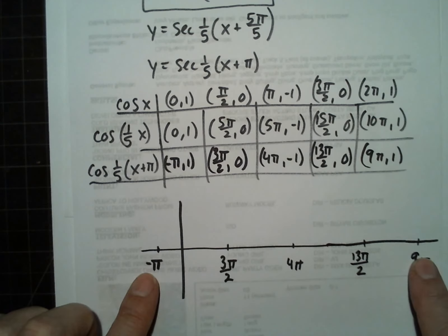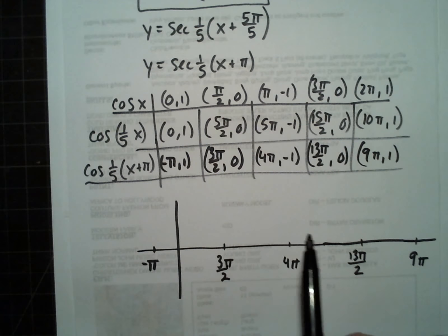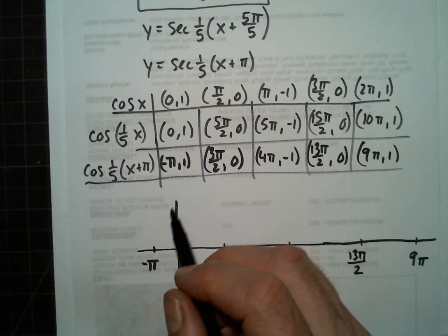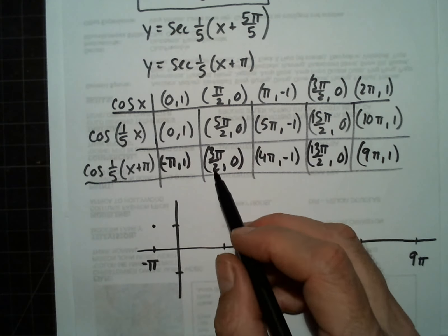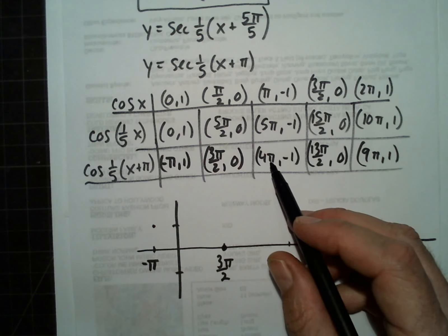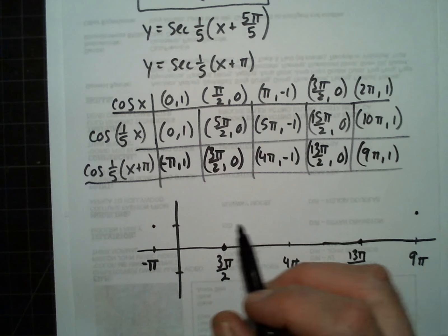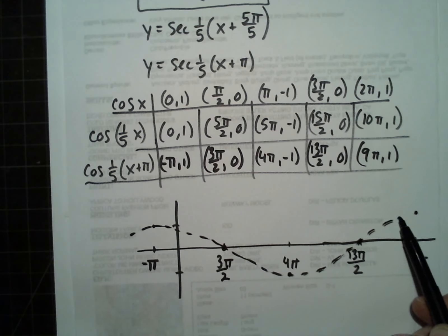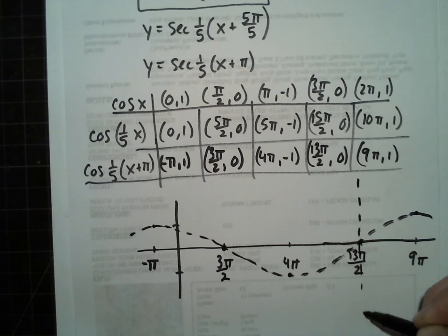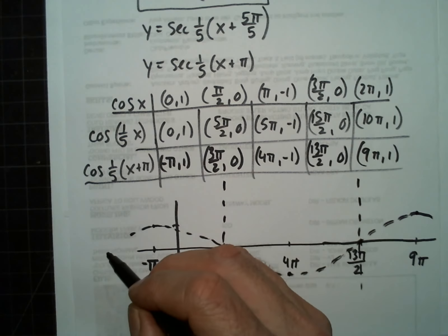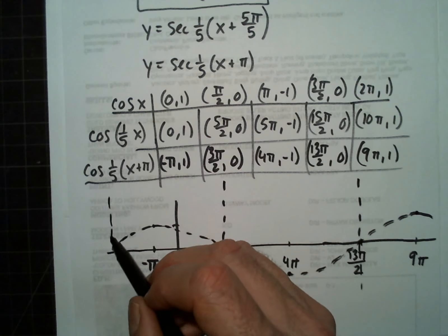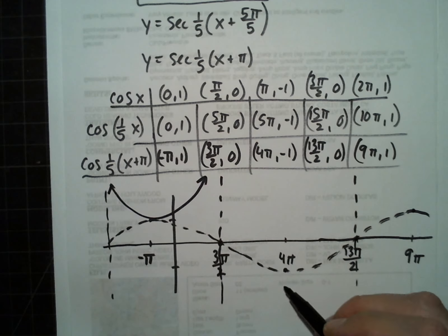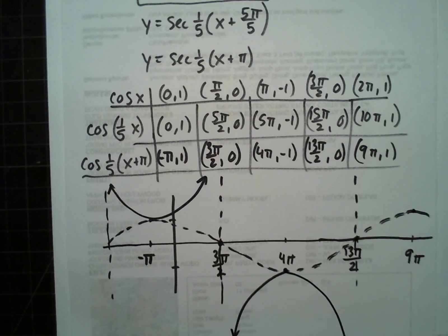We just want to make sure we have those 5 points. Let's start with graphing cosine: at negative pi we go to 1, at 3 pi over 2 we go to 0, at 4 pi we go to negative 1. Now we just have to reflect that.